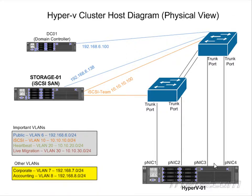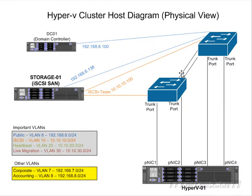We're going to have four physical NICs in our environment, and this is the physical view — how the cables are actually wired. I've got an Ethernet cable going from one NIC to one of my physical switches; the port on the switch is configured as a trunk port. Another physical NIC goes to that same switch, also configured as a trunk port. Then we have two more physical NICs going to a second switch, with all switch ports configured as trunk ports. Connecting to multiple physical switches gives us switch redundancy.